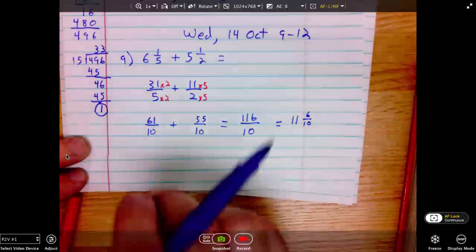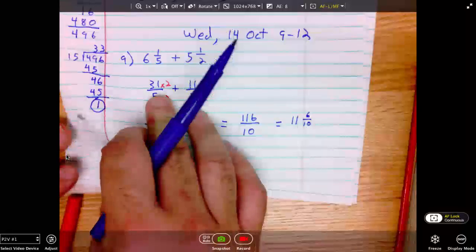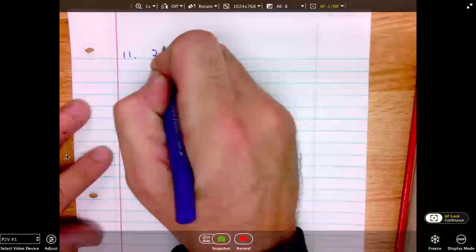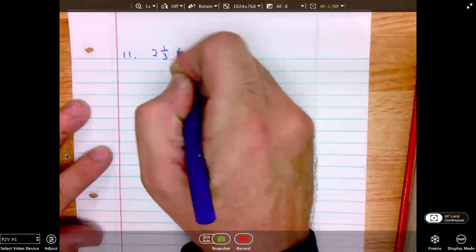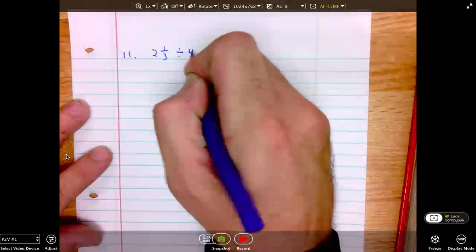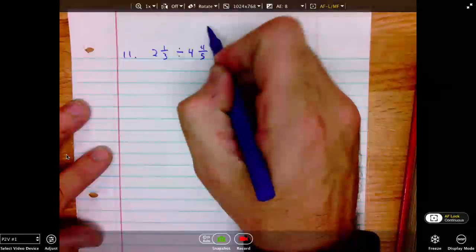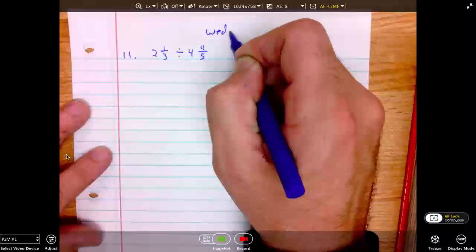Next, we will look at problem number 11. 11 says 2 and 1 third divided by 4 and 4 fifths. This is still Wednesday, 14 October.